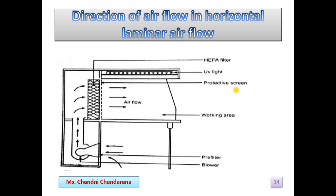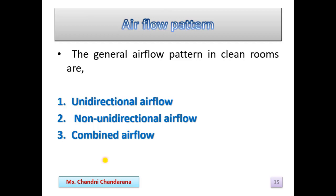This is the flow of air for horizontal laminar air flow. The general air flow patterns in clean rooms are divided into three types: unidirectional air flow, non-unidirectional air flow, and combined air flow.